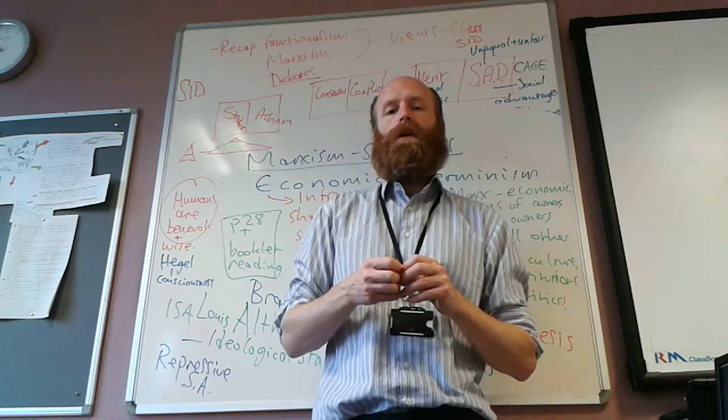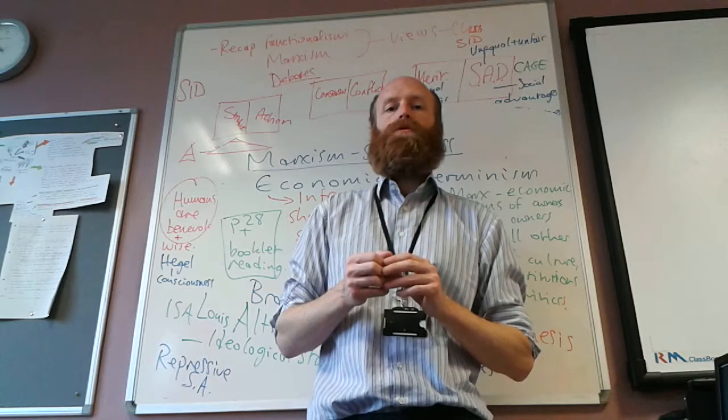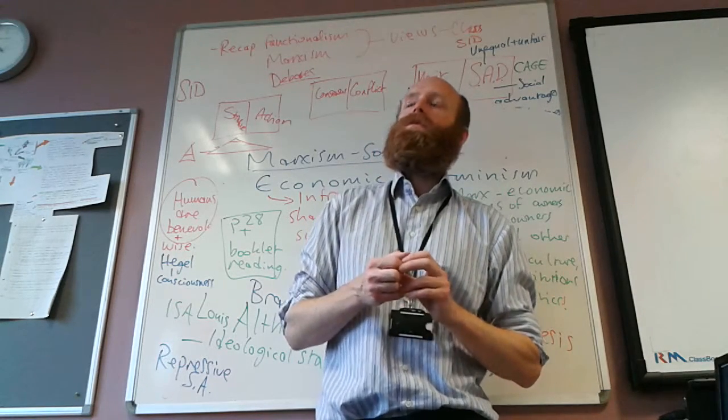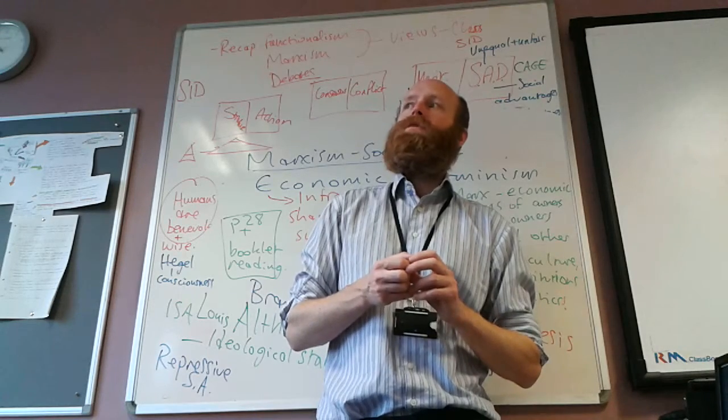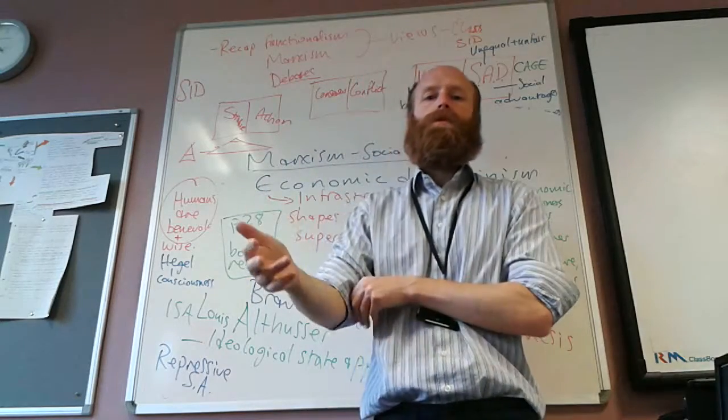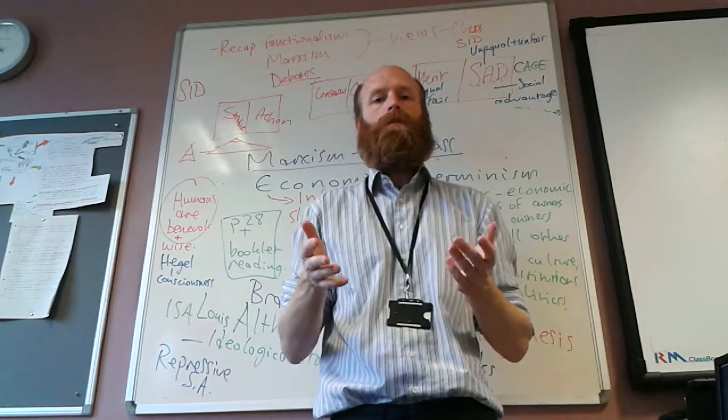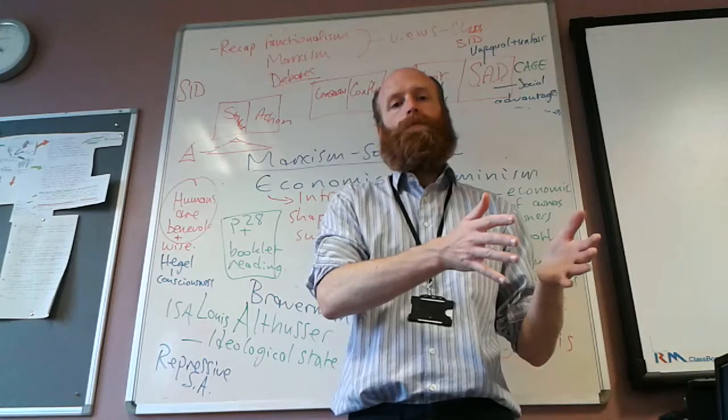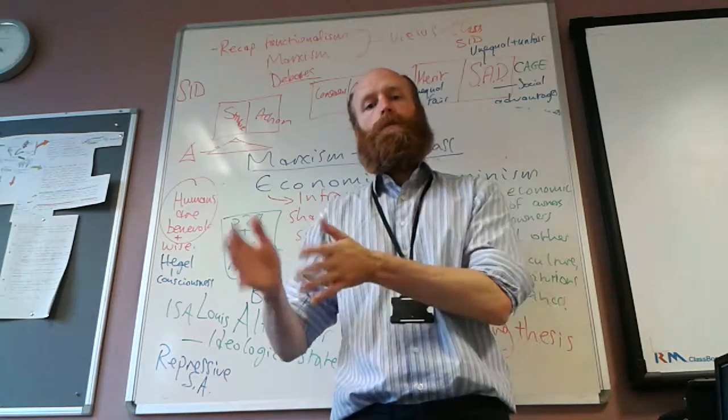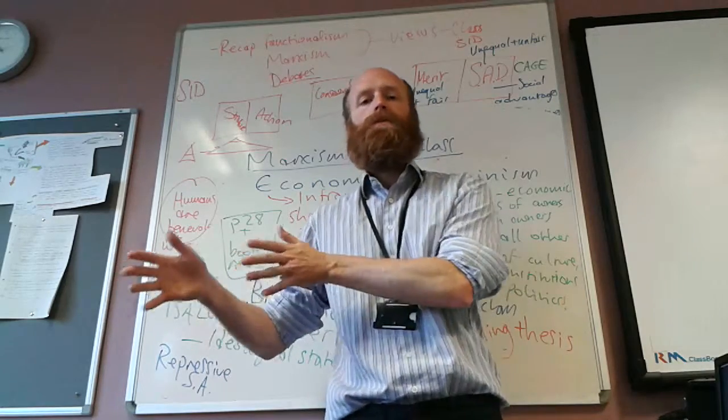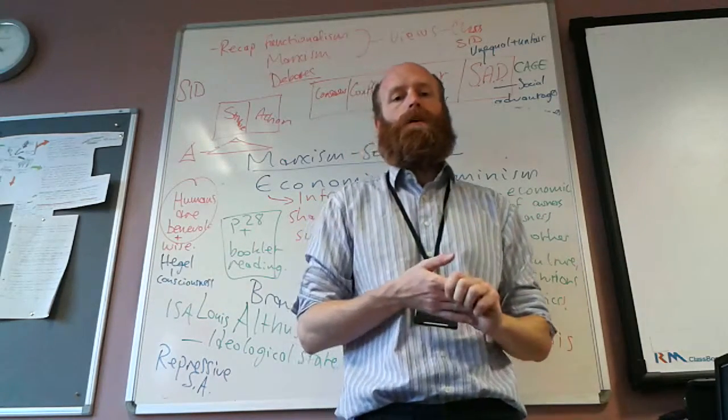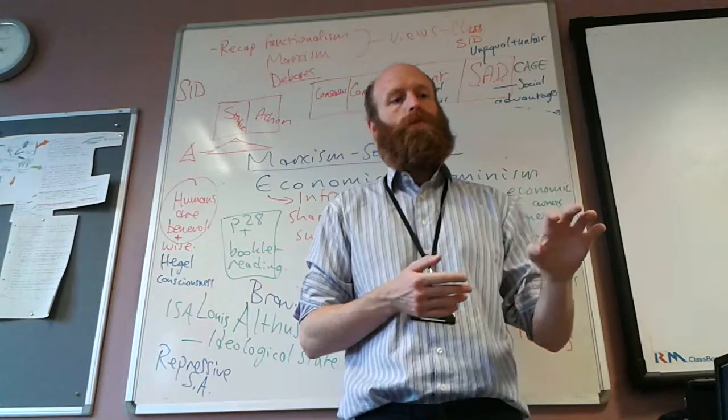Marx argued that there's a class system. He argued that over time there are these stages in history which led to the development of the class system: primitive communism, feudalism, capitalism, and communism are four main stages of history according to Marx.